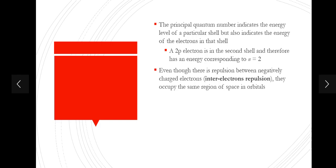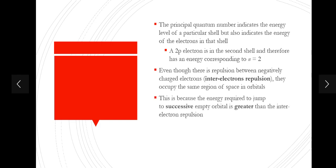Even though there is repulsion between negatively charged electrons — inter-electron repulsion — they still occupy the same region of space in orbitals. This is because the energy required to jump to a successive empty orbital is greater than the inter-electron repulsion. Since lower energy levels are filled first, it costs more energy to jump to the next empty orbital than to pair up. For this reason, electrons pair up and occupy the lower energy levels first.